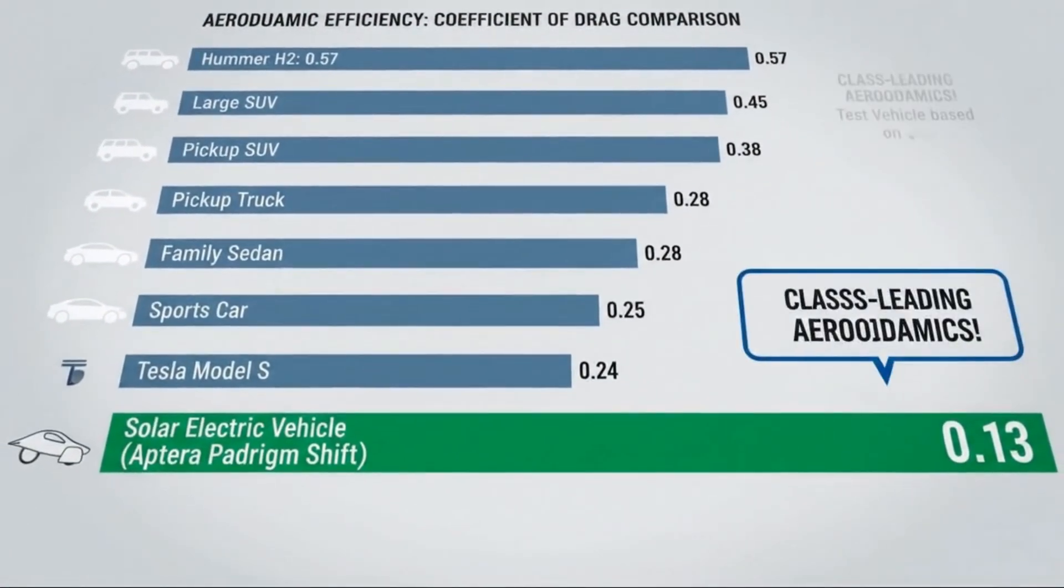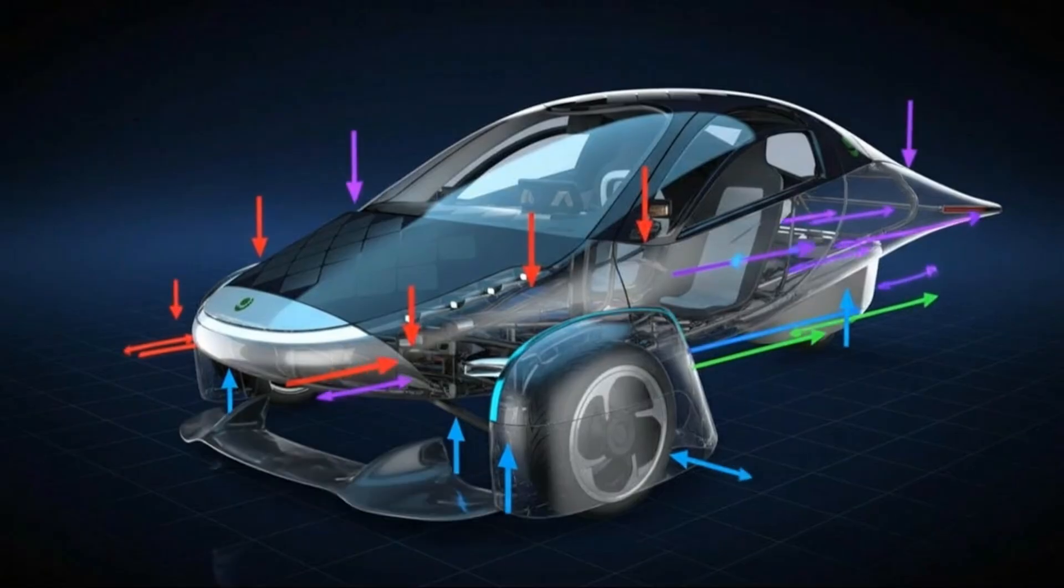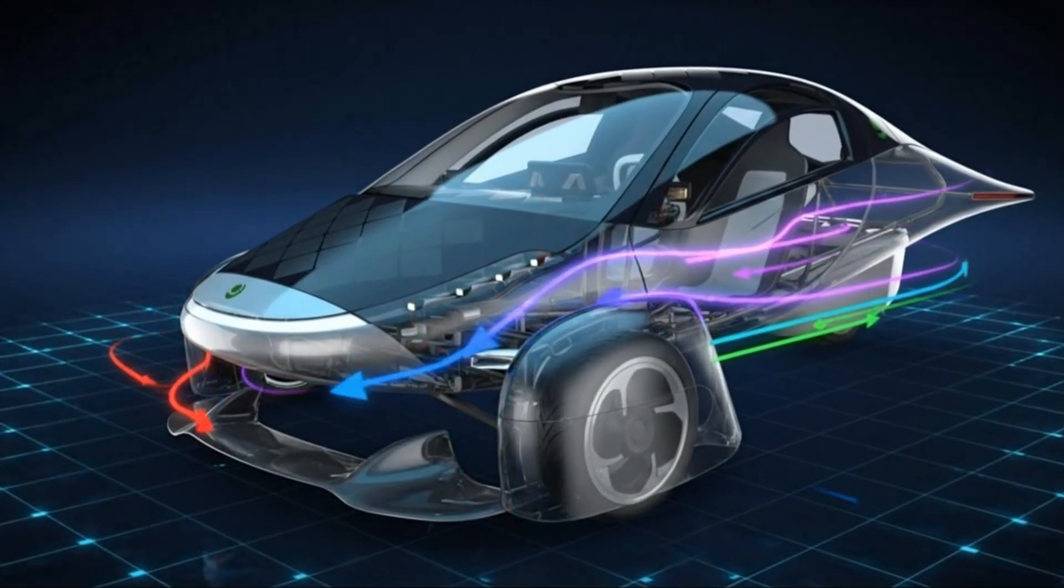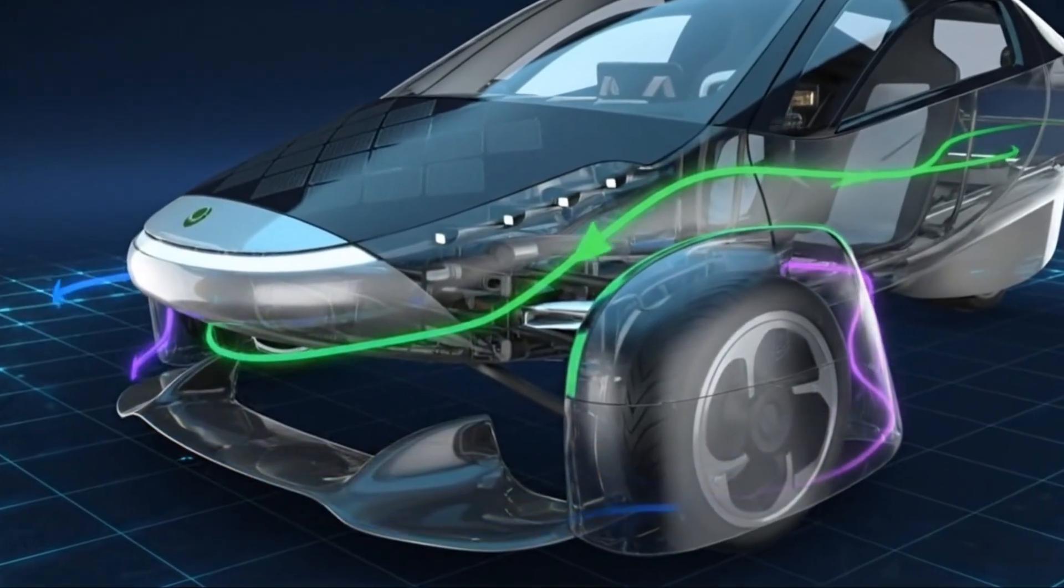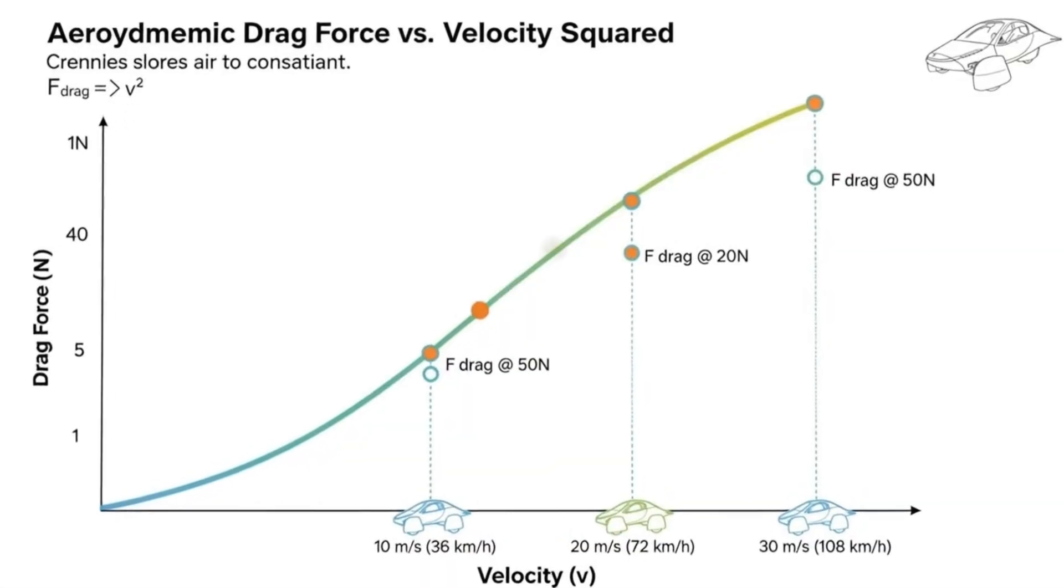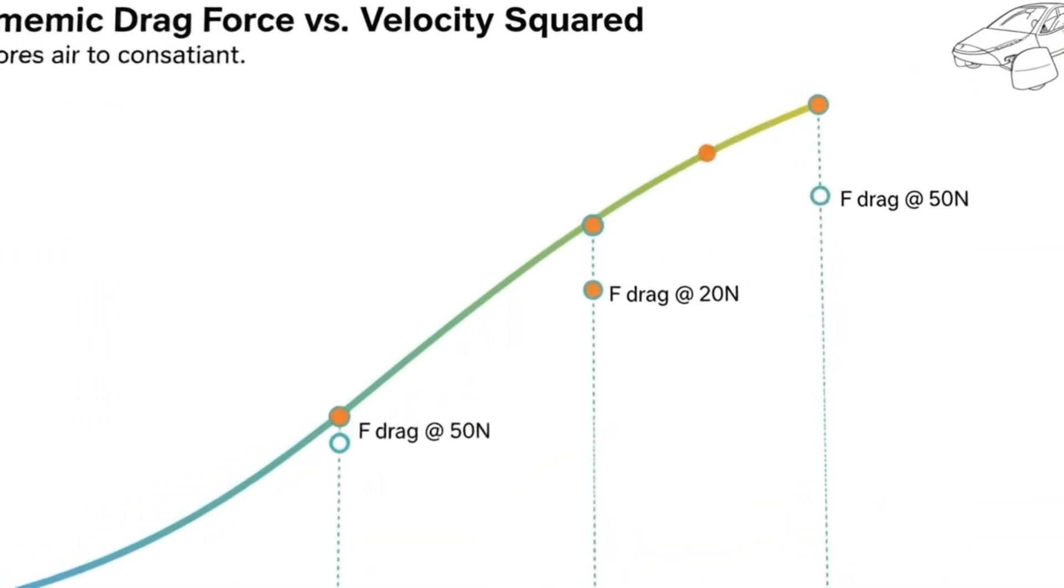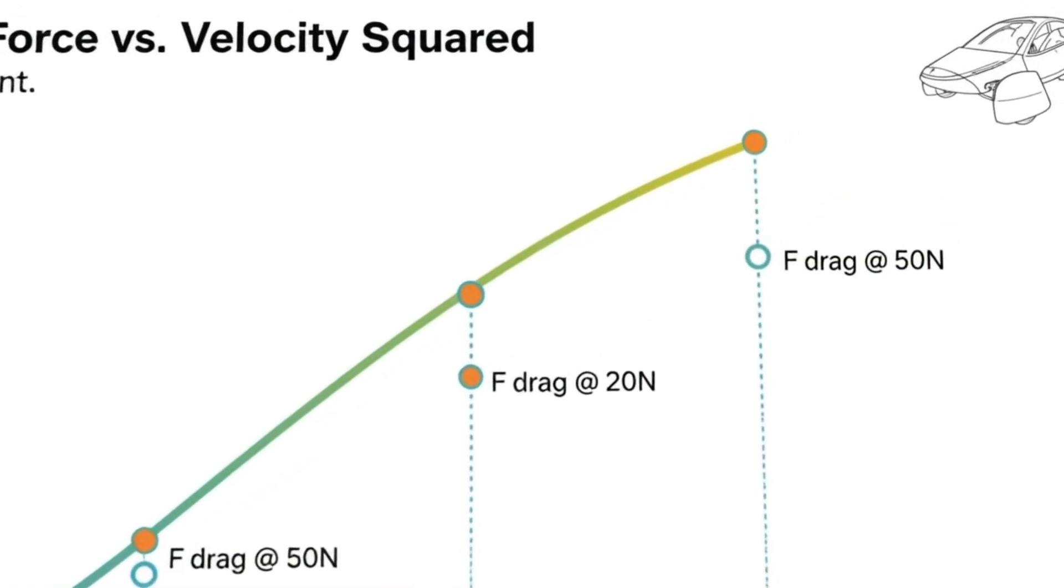Of course, real-world driving always introduces variables. Speed still matters. Higher velocities increase aerodynamic drag, but because Aptera's baseline drag is so low, the penalty is far smaller than in traditional vehicles. Temperature affects battery chemistry.